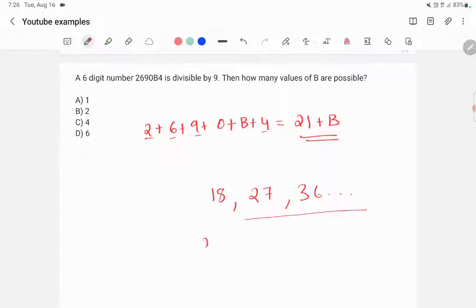So what are the possible values? 21 plus B cannot be 18 because B is a positive number. Then it can be 27. If it's 27, then B will come 6. If 21 plus B is equal to 36, then B will come 15.